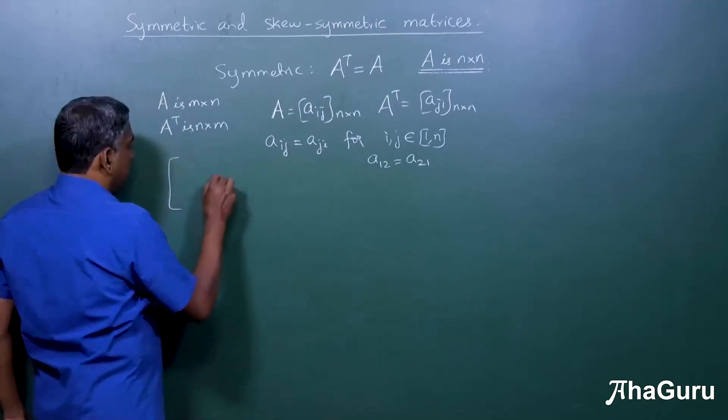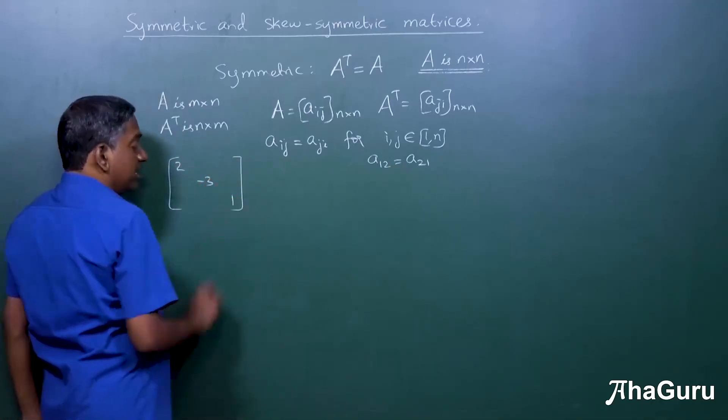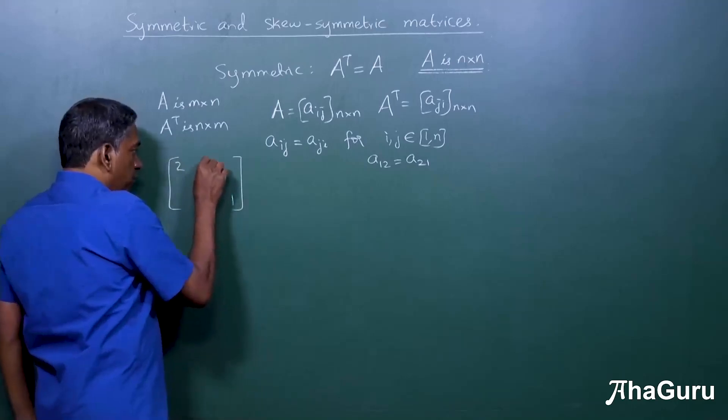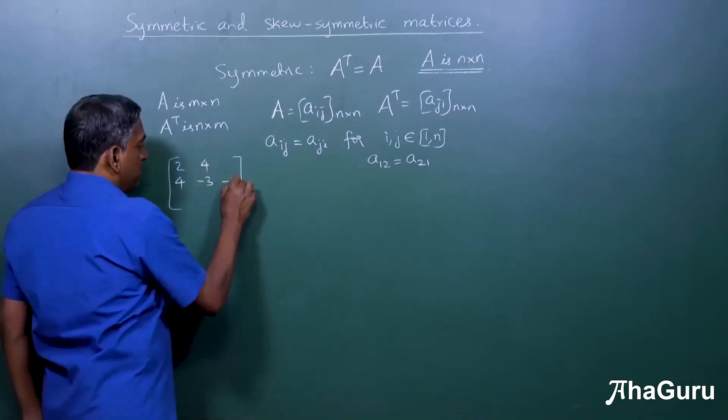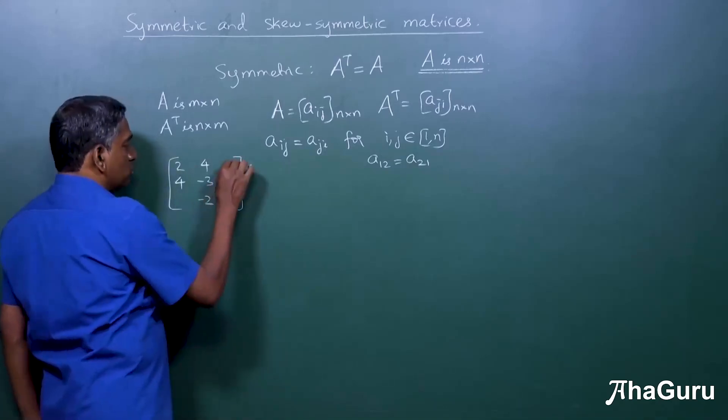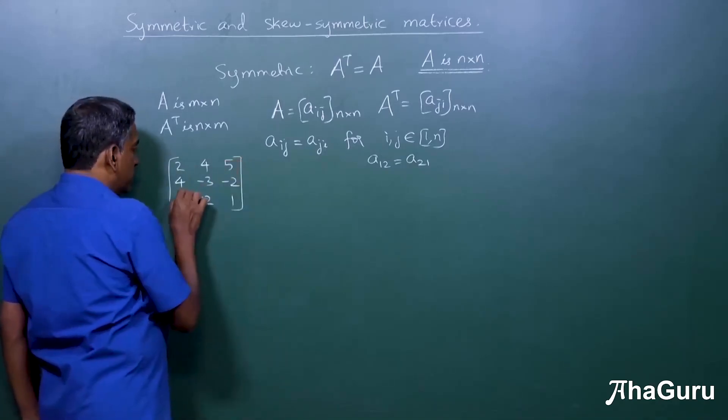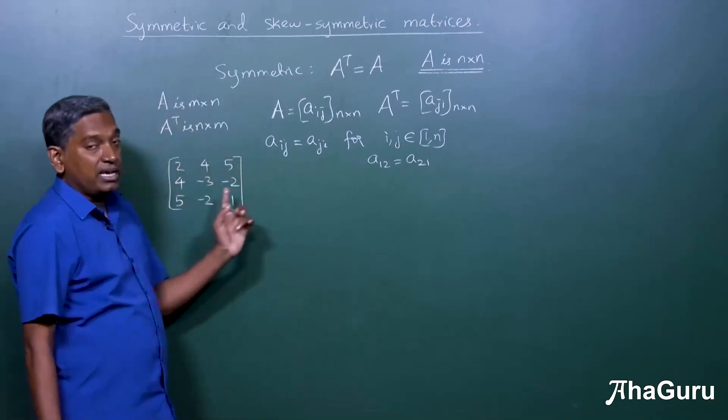For example if you take a three by three matrix, diagonal elements can be anything. But if I put four here, four must be the entry here. If this is minus two, this must also be minus two. If this is five, this also should be five. This is what is a symmetric matrix.